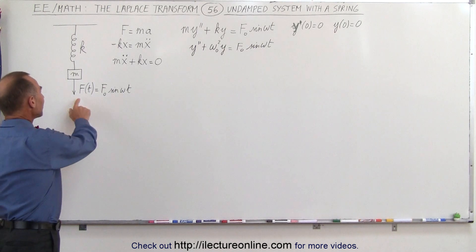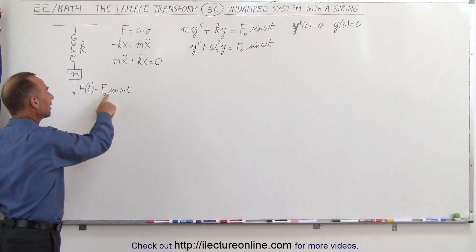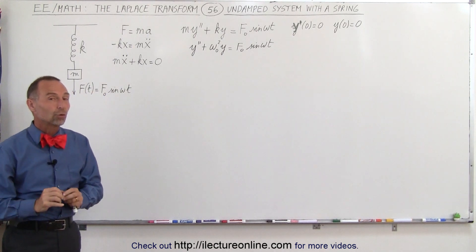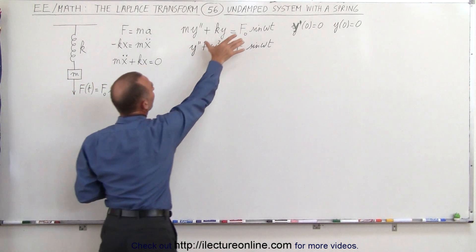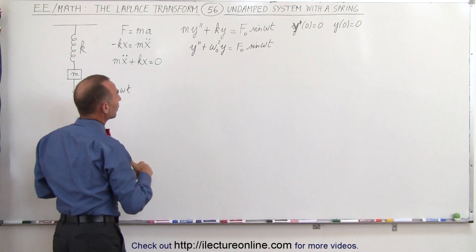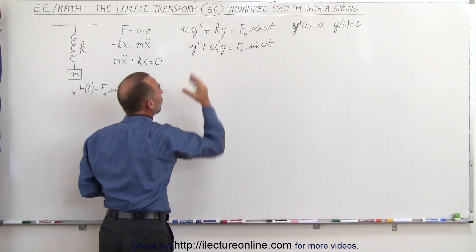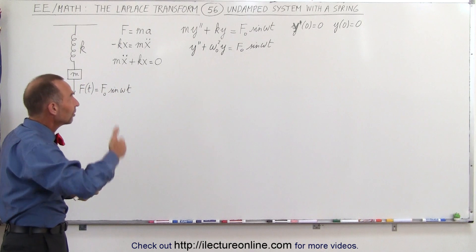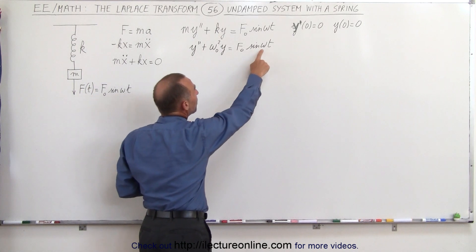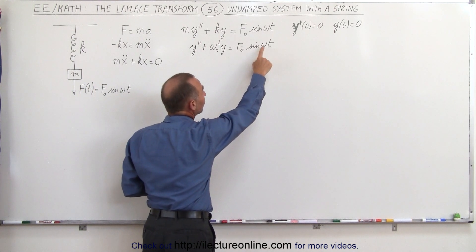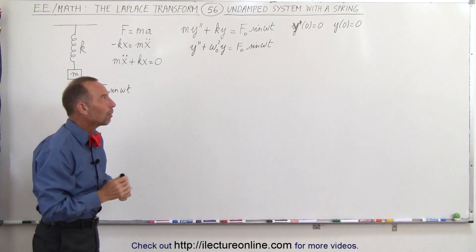But if we have a driving function where the force applied to this mass as a function of time is equal to some constant times a sine of omega t, that's a whole different story. We need to transform our homogeneous differential equation into a non-homogeneous differential equation. The quantity k over m equals omega sub-naught squared — by definition the natural frequency of the system with no driving force. The driving force depends on omega t, where omega is a different frequency than the natural frequency.